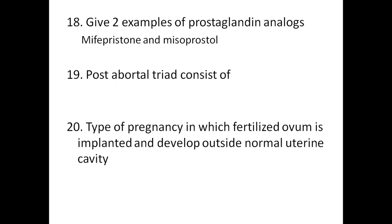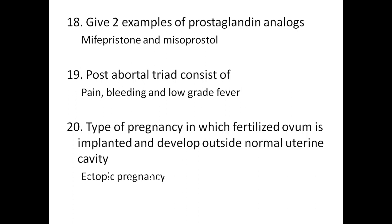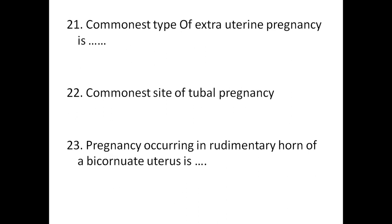Two examples of prostaglandin analogs are mifepristone and misoprostol. The first abortion triad consists of pain, bleeding, and fever. The type of pregnancy in which a fertilized ovum is implanted and develops outside the normal uterine cavity is called ectopic pregnancy. The commonest type is tubal pregnancy, and the commonest site of tubal pregnancy is the ampulla. Pregnancy occurring in the rudimentary horn of a bicornuate uterus is called cornual pregnancy.